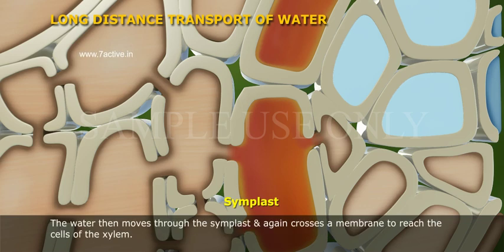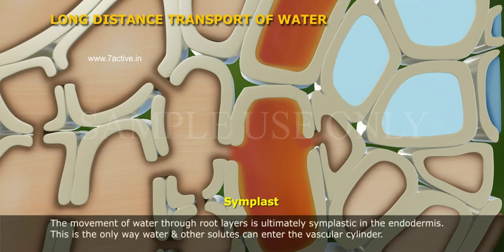The water then moves through the symplast and again crosses a membrane to reach the cells of the xylem. The movement of water through root layers is ultimately symplastic in the endodermis. This is the only way water and other solutes can enter the vascular cylinder.